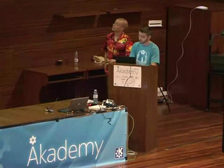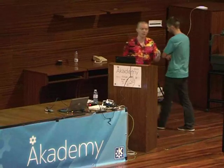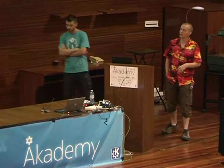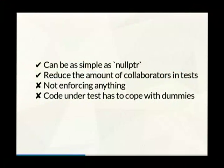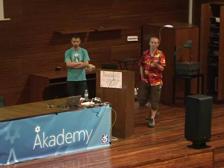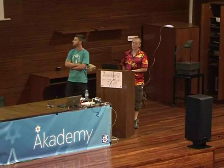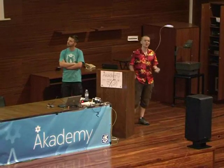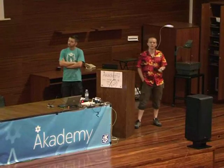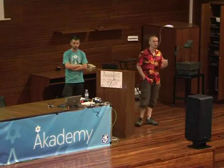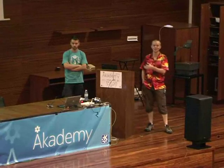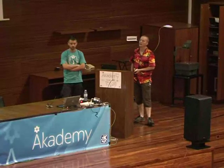So that's our first case. All dummies have pros and cons. The good thing about dummies is they are extremely simple to use — basically you wrap a null pointer and you're done. You probably already do that without even knowing it, as a means in your test to avoid creating a lot of collaborator objects for nothing, because you know they won't be used. On the other hand, they just cut dependencies and that's it — they won't help you to enforce any type of checking in your test, and your code under test has to be able to cope with a null pointer.